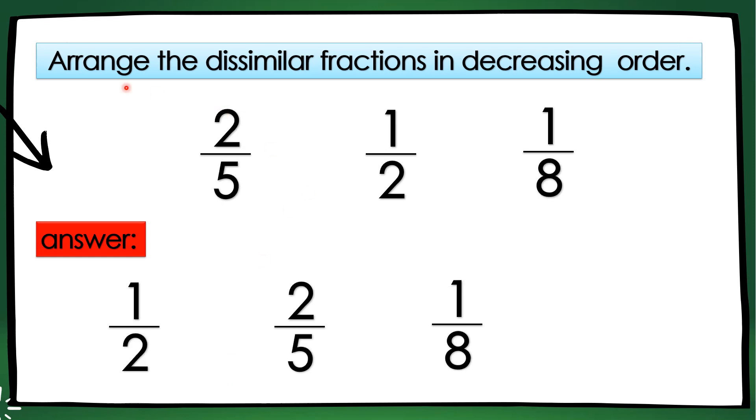Let's try this. Arrange the dissimilar fractions in decreasing order. So, here, you need to find the LCD because they have different denominators. And, of course, as we can see here, they have different numerators as well. So, the answer is already provided. It's 1/2, 2/5, and 1/8. Now, you'll have to show me the solution. I believe you can do it.